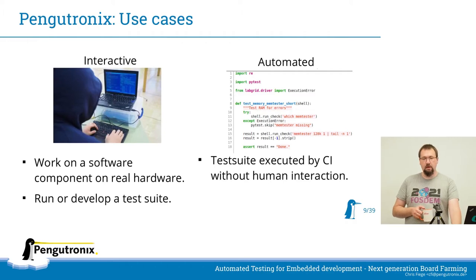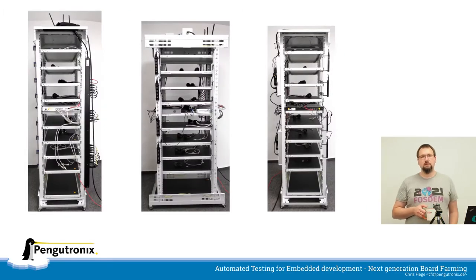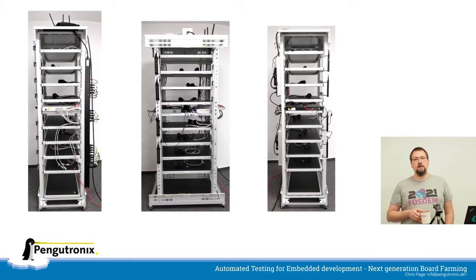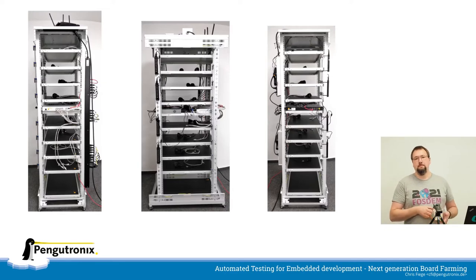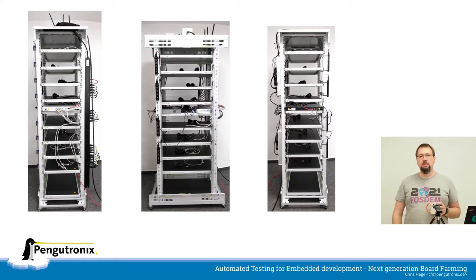How does such a lab look? This is a newer one built during our home office peak time during the pandemic. It's a 19-inch wide server rack without the walls. We have eight levels where we can put devices under test, each level with two slots for two devices. There is common infrastructure shared by all slots directly attached to these racks. The racks connect with Ethernet to our lab network and wire a mains socket to the power supply. We put them on wheels so you can turn them around to access the back side.